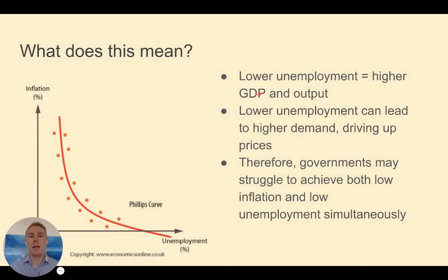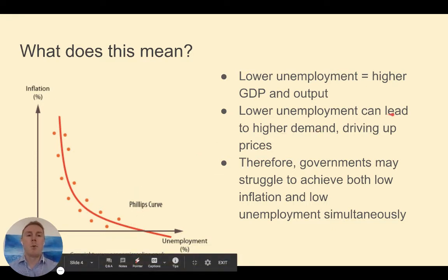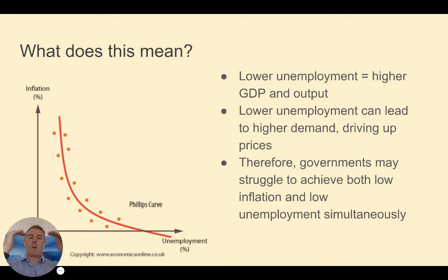Lower unemployment will bring higher GDP and output. We want to lower unemployment, but lower unemployment can lead to higher demand and will tend to drive up prices. As more people have jobs, more people have money and disposable income to spend, it will drive up aggregate demand, more people will purchase goods and services, and it will drive inflation. It's good for the economy, but it will drive up CPI inflation.